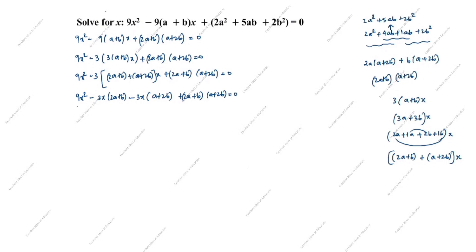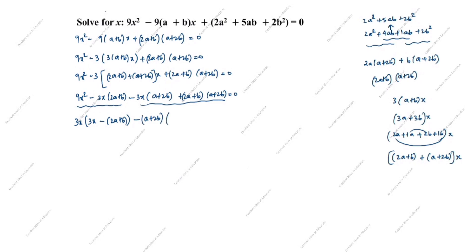We take 3x common from the first two terms: 3x(3x minus (2a+b)). From the last two terms, (a+2b) is common: (a+2b)(3x minus (2a+b)). Now (3x minus (2a+b)) is common in both, so we factor it out. Note: minus into minus gives plus, so the factored form gives two factors equal to zero.